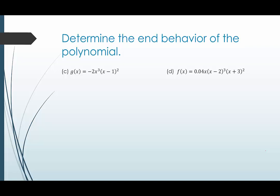In the next examples, g of x equals negative 2x cubed times the quantity x minus one squared. The polynomial is in factored form, so to find the degree we multiply the largest degrees of each factor: x cubed times x squared gives us x to the fifth. So the first term is negative 2x to the fifth.